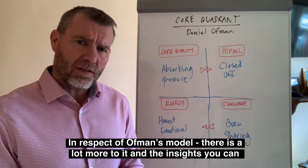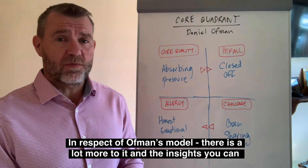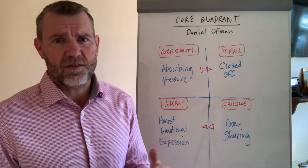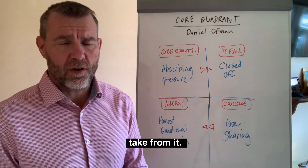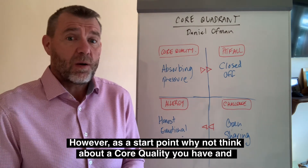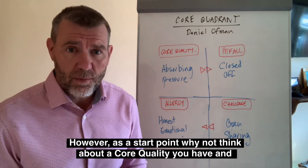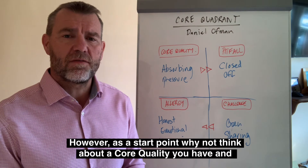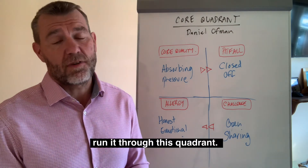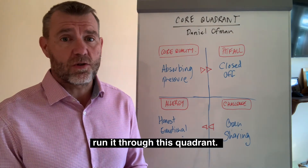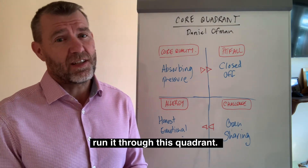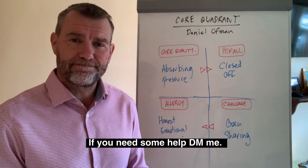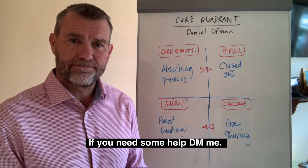In respect of Offman's model, there is a lot more to it and the insights you can take from it. However, as a start point, why not think about a core quality you have and run it through this quadrant? If you need some help, direct message me.